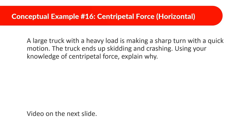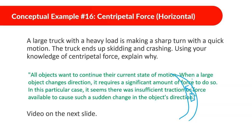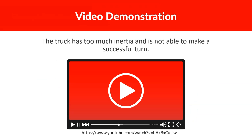A large truck with a heavy load makes a sharp turn with a quick motion, ends up skidding and crashing. Use your knowledge of centripetal force to explain why. If the truck tries to turn too quickly, there isn't enough friction to provide the required centripetal force, so it skids and crashes. This is why speed advisories around bends are lower than the posted speed limit — you should take turns at a slower rate.